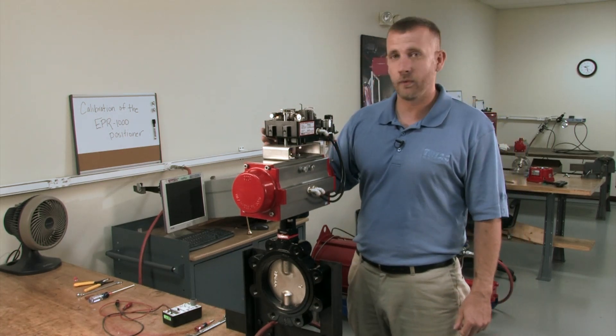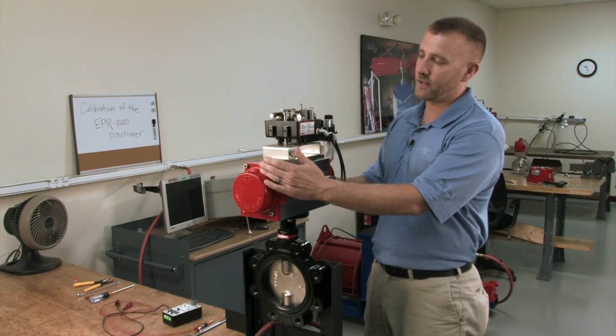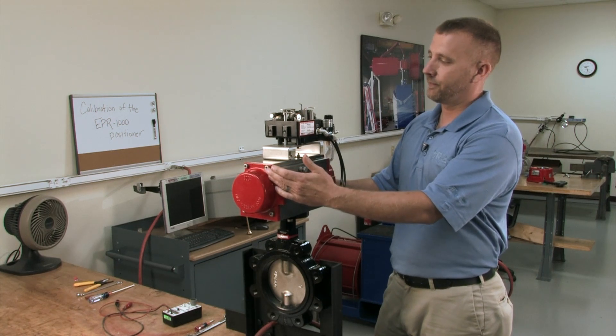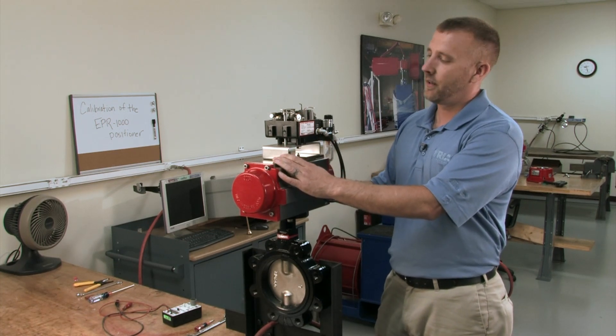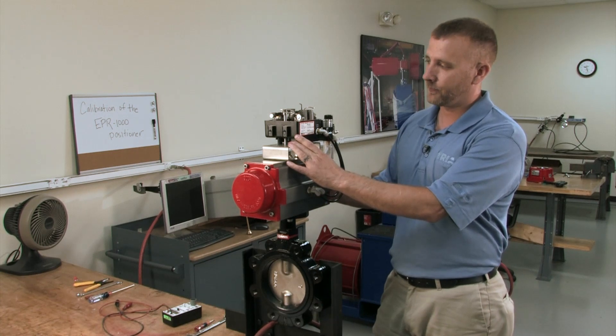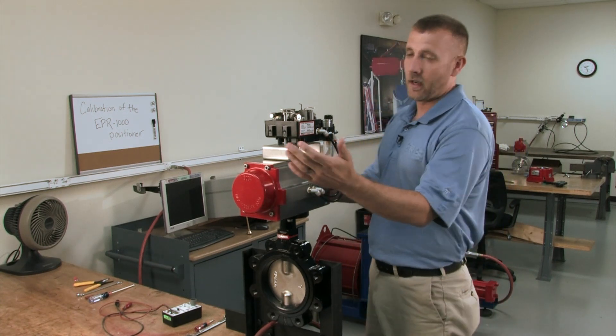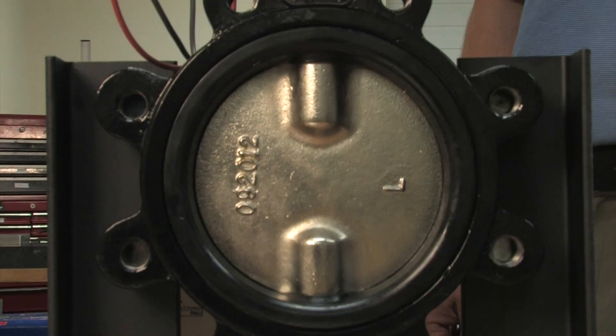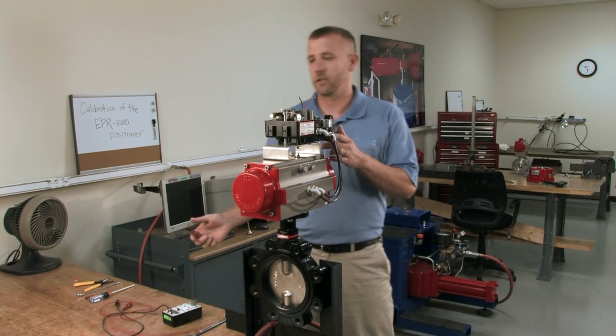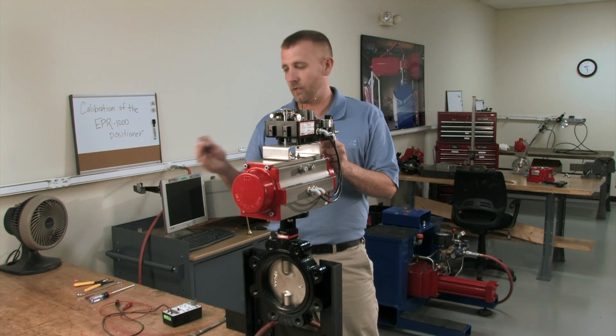That's why we also put a filter regulator on all positioners that we sell. This positioner is for our 2R300SR actuator, which is a rotary actuator. You can also get this for linear actuators. For this demonstration, obviously, our 2R300SR and our six inch resiliency to butterfly valve. Okay, now I'm going to start hooking everything up just for our basic calibration.